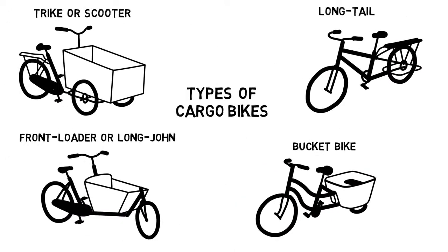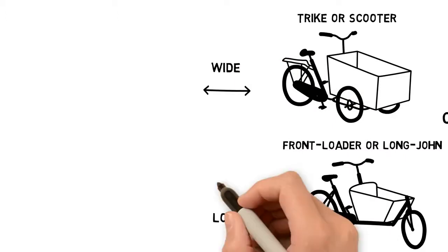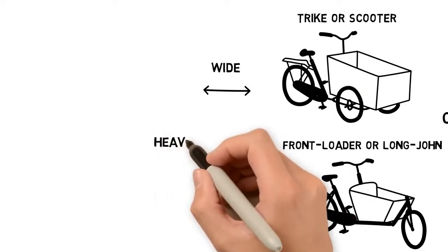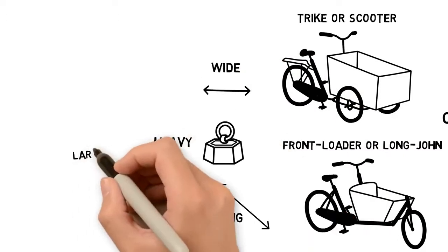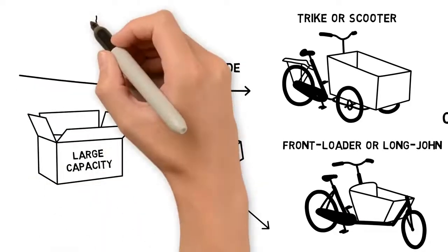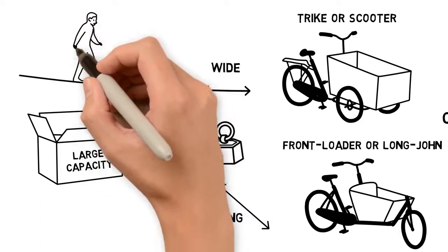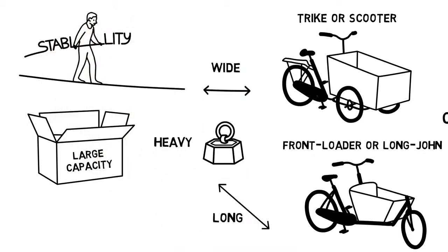When I was choosing my cargo bike, I found the trike to be too wide and the front loader too long. Both were very heavy and cumbersome, although they do offer large capacity for loads. The two front wheels of the trike give it great stability, especially when stopped, but it's pretty difficult to turn. The front loader has a more aggressive riding style that is similar to that of a normal bike.